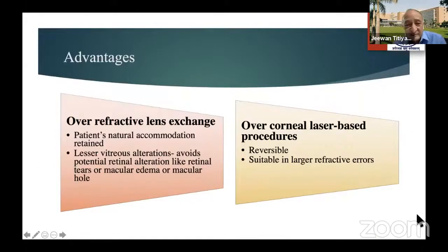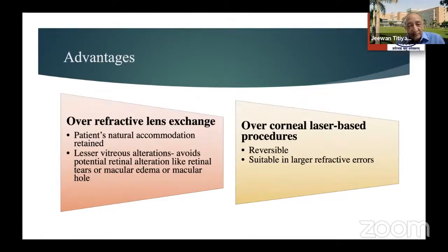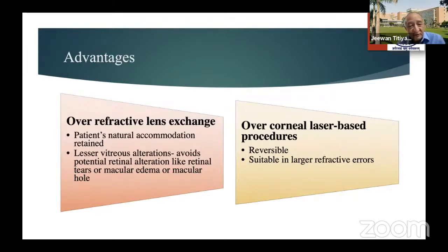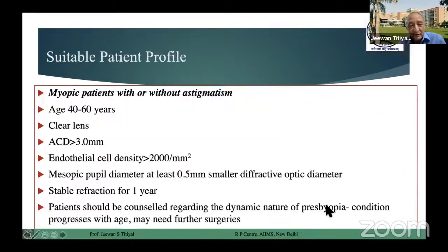The advantage — as discussed by the experts — over refractive lens exchange and other ways of correcting: it is a reversible procedure that's suitable for a larger degree of refractive error, especially larger cylindrical power also. And maybe because of the phakic situation, vitreous changes or vitreous-based disturbance will be less in these cases. The chances of retinal complication will be less. But considering they are high myopes, they would have their own set of problems.